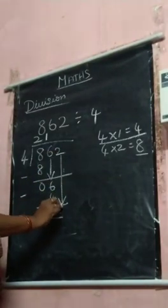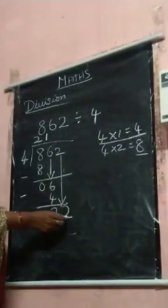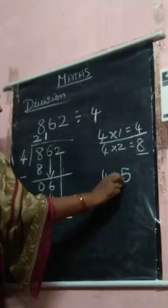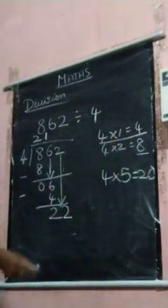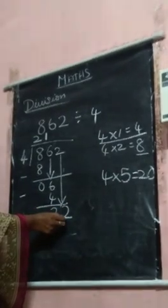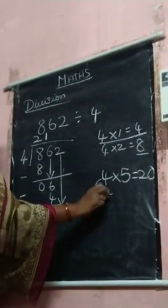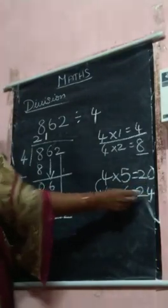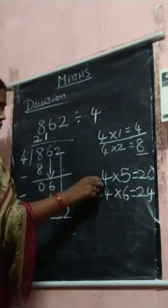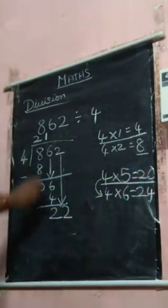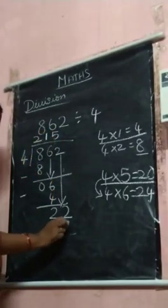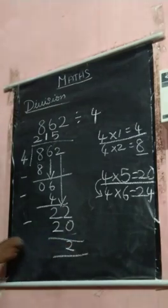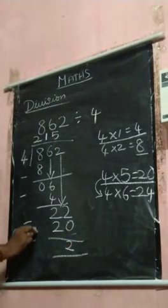You bring down this 2, 22. This is 2 digit number, this is 1 digit number. You start from 5, 4 5's are 20, 20 is smaller than 22, so that go down. 4 6's are 24, 24 is bigger than 22, so that you go up. 4 5's are 20, you subtract, 2 minus 0, 2. Quotient is 215, reminder is 2.